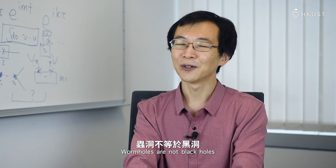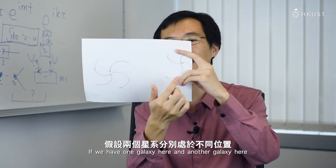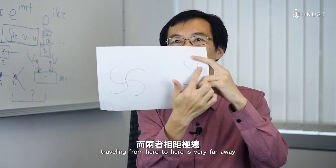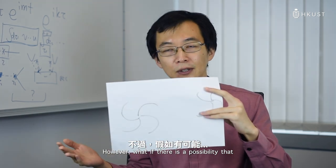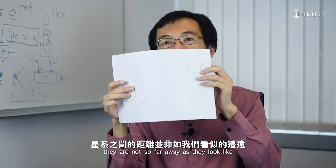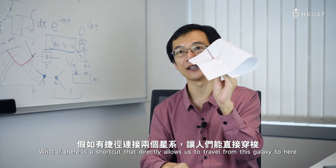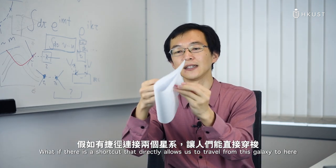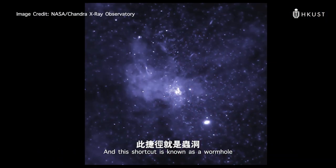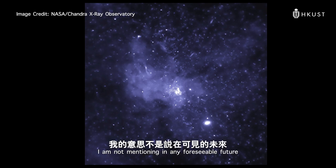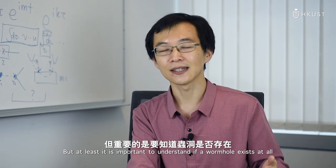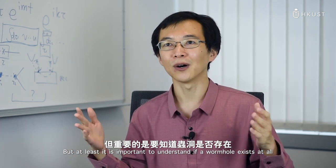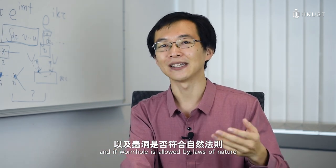Another direction is about wormholes. Wormholes are actually not black holes. Imagine if we have one galaxy here and another galaxy very far away — we'd need billions of years to travel from one to the other. However, what if there is a possibility that they are not as far as they look? What if there is a shortcut — a wormhole — that allows us to travel directly between them? I'm not imagining we can build a space machine or time machine to use a wormhole in any foreseeable future, but it is important to understand if this kind of wormhole can exist at all and whether it is allowed by the laws of nature.